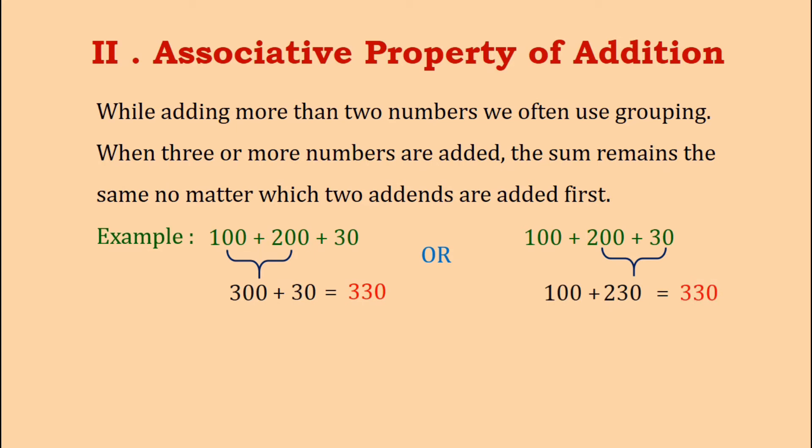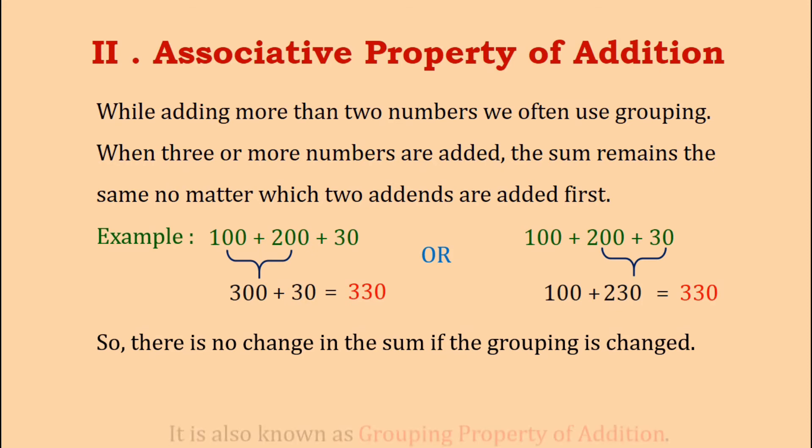Thus, we can clearly see that while adding three numbers or even more than that, there is no change in the sum no matter which two addends are added first. This property is also known as the grouping property of addition.